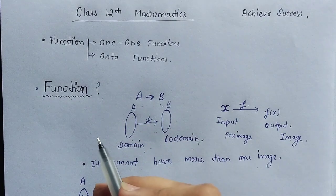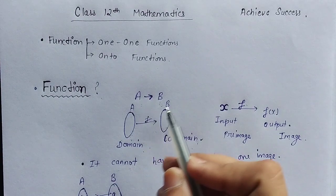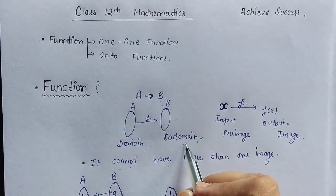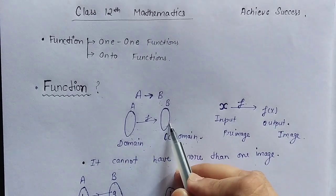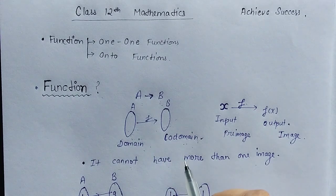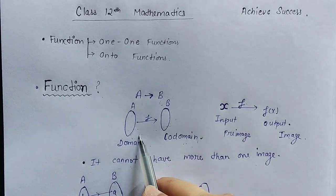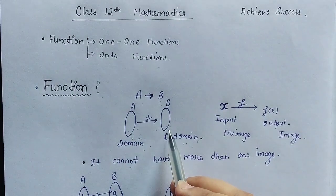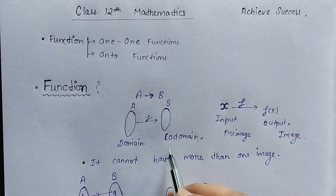The very first question is: what is a function? A function is a special type of mapping from A to B, where A is the domain and B is the co-domain. Each and every element of the domain gets a unique image, and no element of the domain can have more than one image. Such a special mapping or relation we call a function.